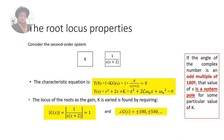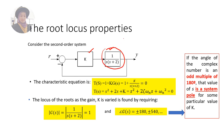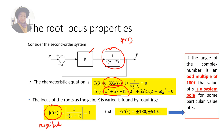Now let's look at the root locus properties. Consider the same second-order system where K is the gain and G(s) is the open-loop transfer function. The characteristic equation is s² + 2s + K = 0. The locus of the roots as gain K is varied is found by requiring two criteria: the Magnitude Criterion and the Phase Criterion.